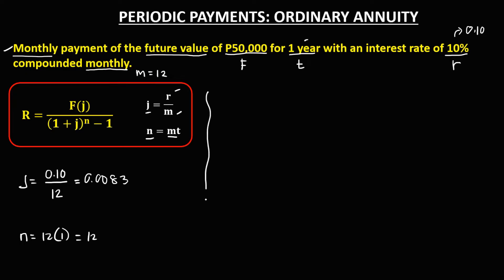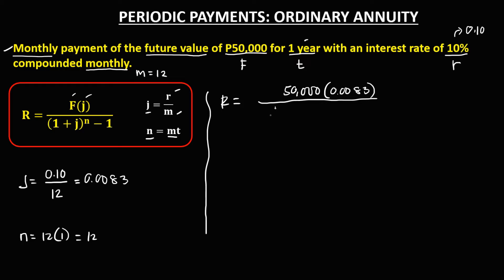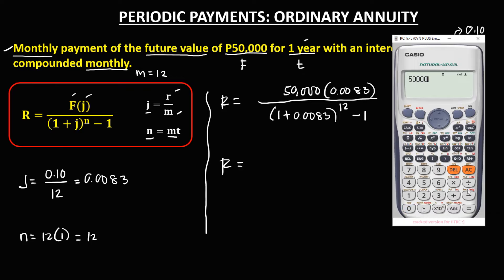To solve now for the regular payment R, we have: R equals the future value P50,000 times J, which is 0.0083, over the quantity (1 plus J, which is 0.0083) to the power N (N is 12), then minus 1. For the numerator: P50,000 times 0.0083 equals P415.